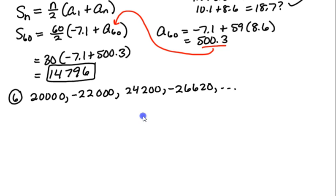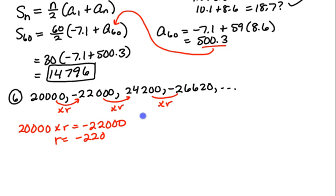So how do you find geometric? I remember that to get from this term to this term, I multiply by r times r times r. So if 20,000 times r equals negative 22,000, then r has to be negative 22,000 divided by 20,000, which reduces to negative 11 over 10 or negative 1.1, whichever you prefer. If you check negative 22,000 times negative 1.1, it will give you the third term. If you take the third term times negative 1.1, it will give you the fourth term. So you should always check that, and those do turn out to be correct.